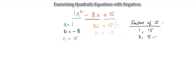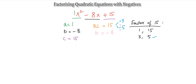So we know the pair is 3 and 5. However, they add to give positive 8, not negative 8. Since the product must be positive and the sum must be negative, both numbers need to be negative — so minus 3 and minus 5. Negative times negative gives a positive, and adding the negatives gives minus 8.